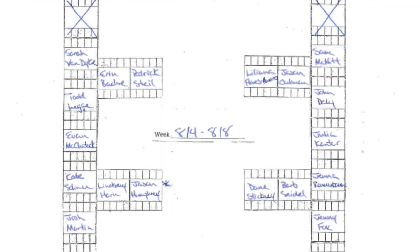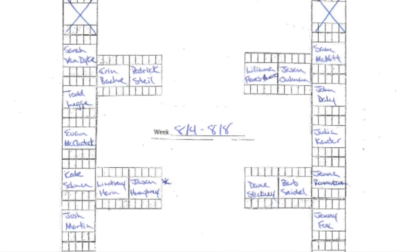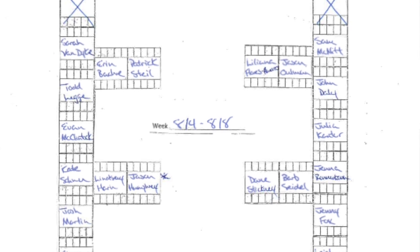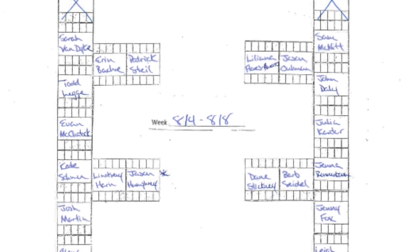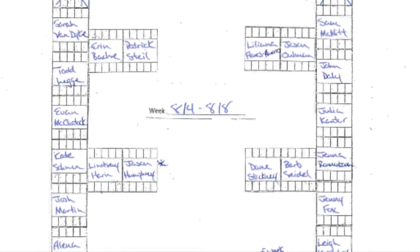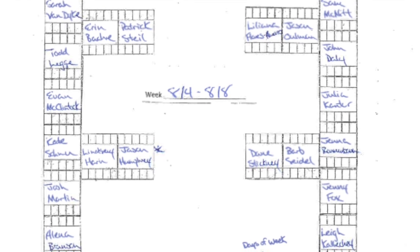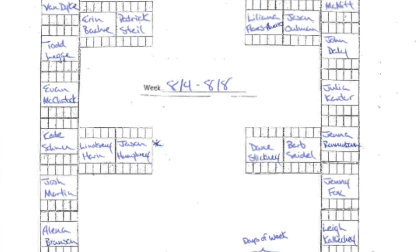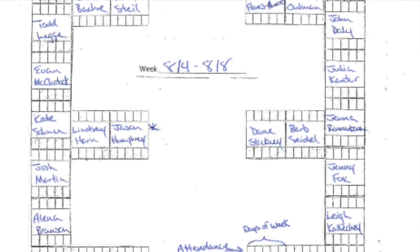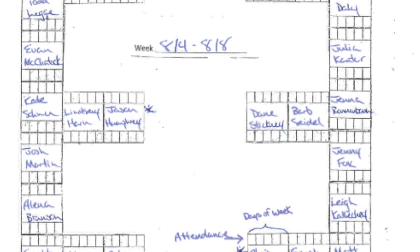Consider creating a seating chart before the first day of school based off the rosters that you have. Traditional discourse suggests seating charts are meant as a punitive measure to invoke power and control, but this isn't necessarily true. A seating chart is about learning names, finding collaborative groups that work well together, and setting up the expectations and routines that are pivotal to building classroom culture and community.